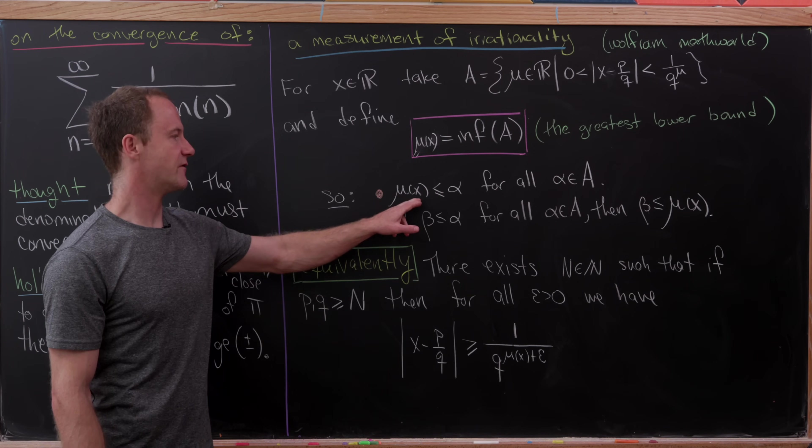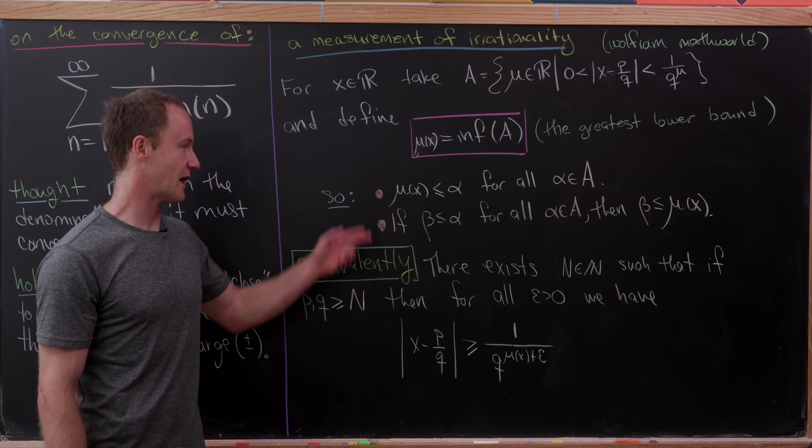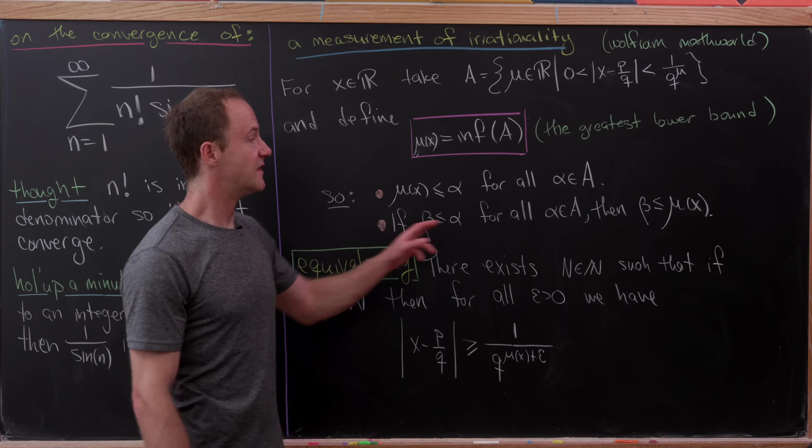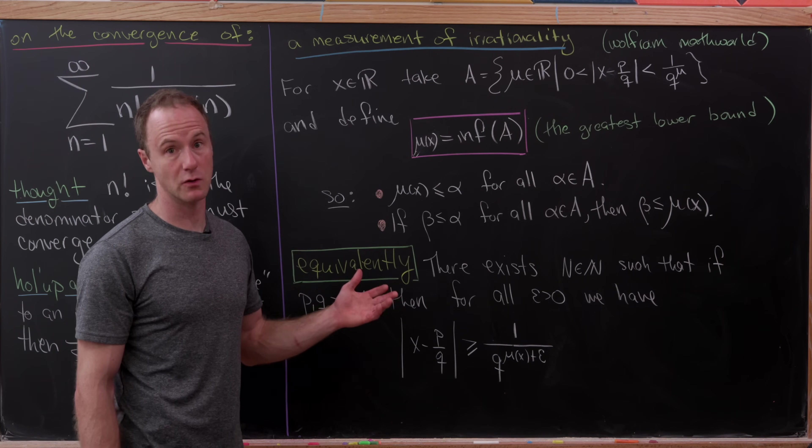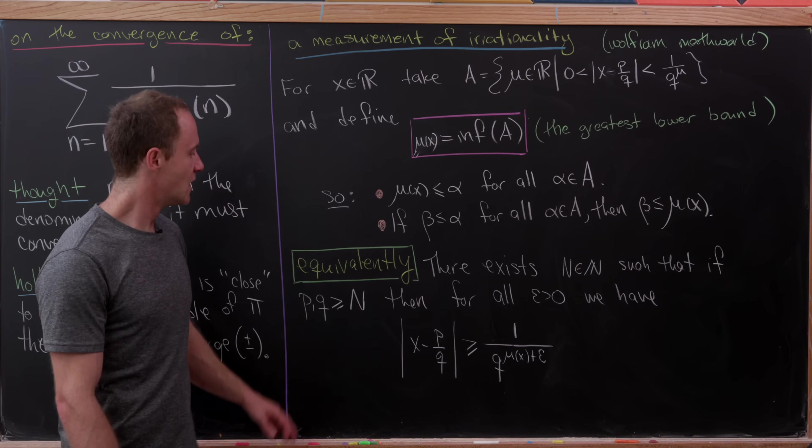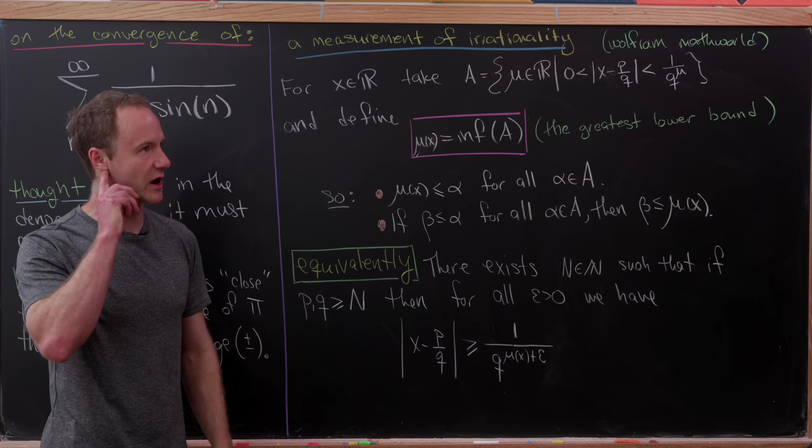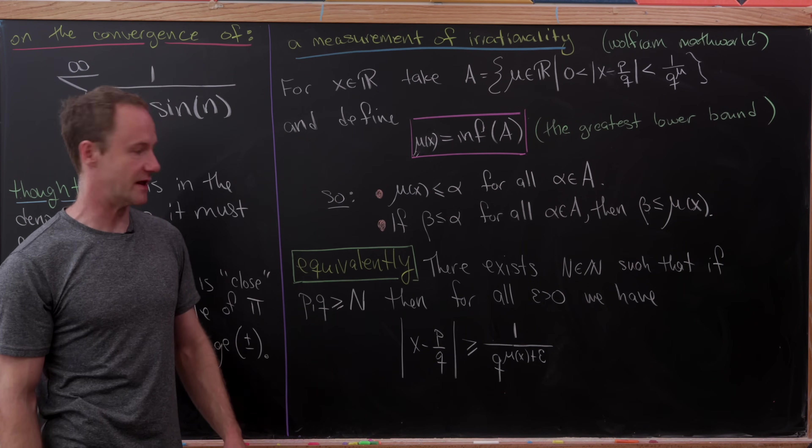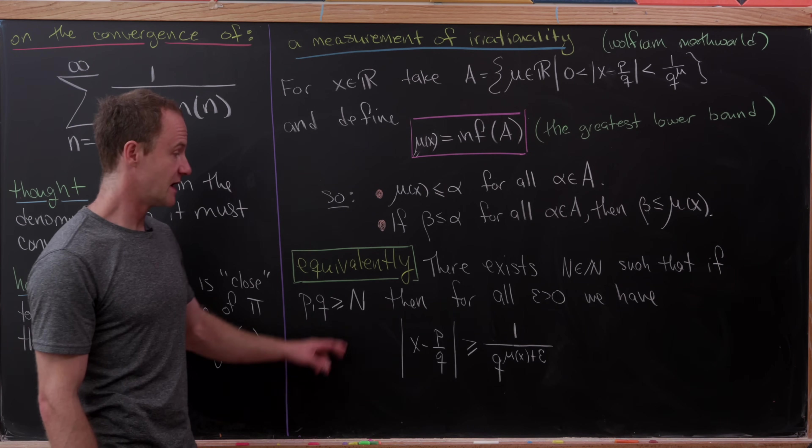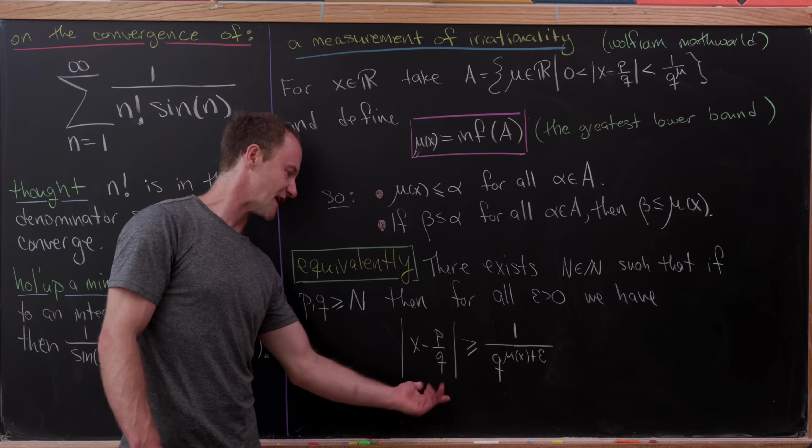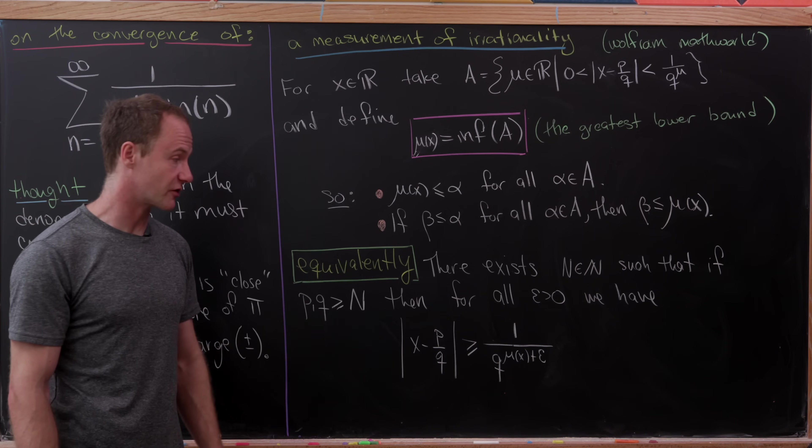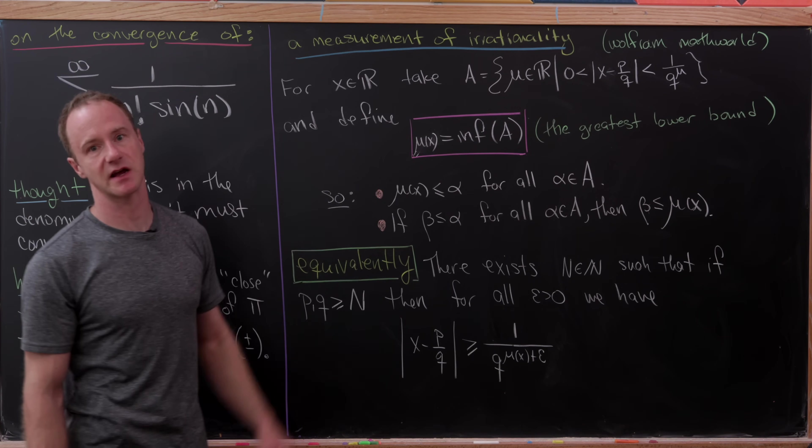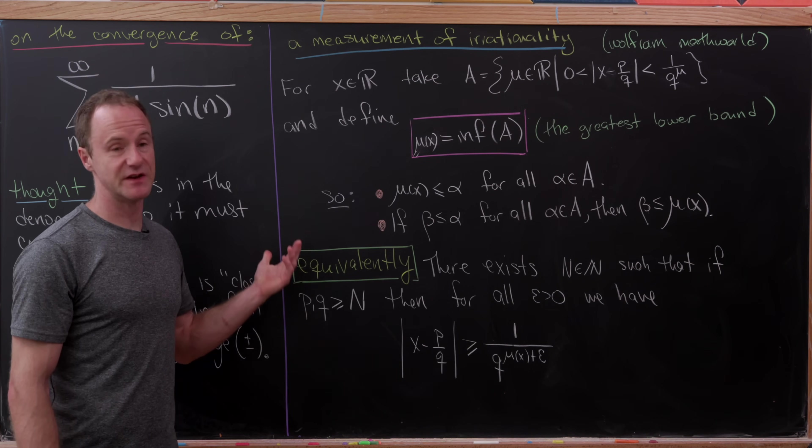In other words, mu of x is less than or equal to alpha for all alpha in the set, so that's a lower bound. If we have another lower bound beta, then beta must be less than or equal to mu of x. Equivalent to this definition is: there exists some natural number n such that if p and q are greater than or equal to n, then for all epsilon bigger than 0, the absolute value of x minus p over q is greater than or equal to 1 over q to the mu x plus epsilon.